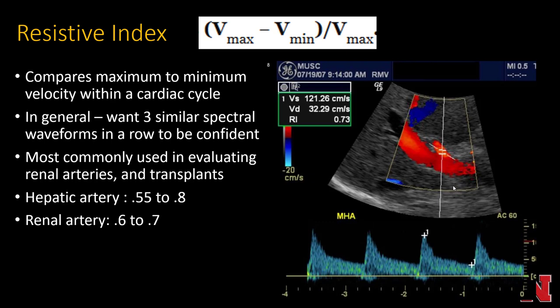The Doppler resistive index is calculated from a spectral analysis by taking the maximum velocity minus the minimum velocity, divided by the maximum velocity. This compares maximum to minimum velocities within one cardiac cycle. For accuracy, you want to see about three spectral waveforms in a row. It's most commonly used in evaluating renal arteries and specifically transplant vasculature. The hepatic artery RI is typically 0.55 to 0.8, and the renal artery is about 0.6 to 0.7.